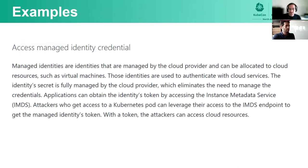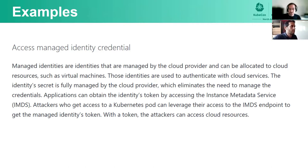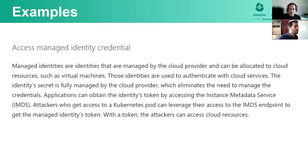The first one is access managed identity credential. In some cloud providers, you can allocate identities to cloud resources like virtual machines. For example, in AWS you have EC2 roles; in Azure, you have managed identity. You can access the token of the identity from the virtual machine itself and also from the containers that run on that virtual machine. So if attackers gain access to a container, they can potentially grab the token of the identity attached to the underlying node. With this token, they can later access other cloud resources, depending on the permissions of this identity. In some cloud providers, you can prevent containers from accessing this identity token and basically mitigate this threat.